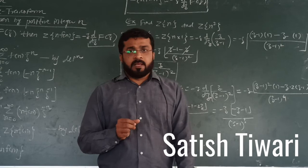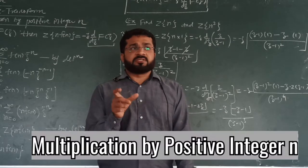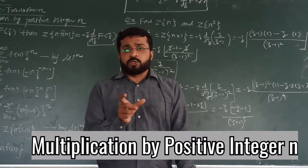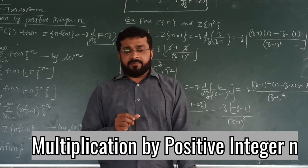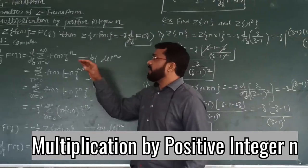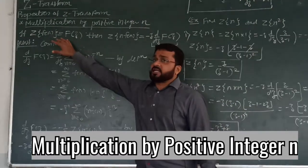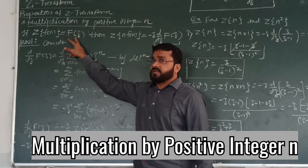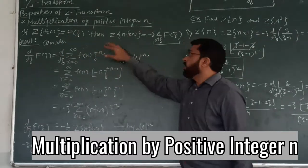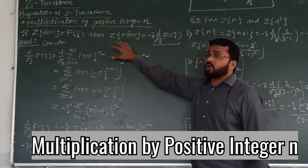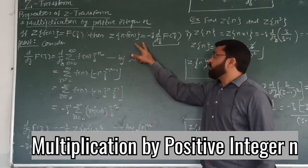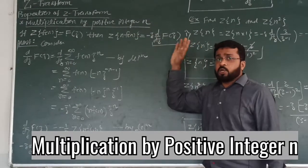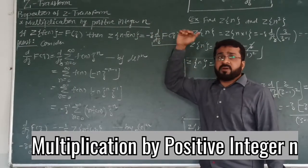The properties of Z-transform. The property we are going to see is multiplication by positive integer N. We have a statement that if the Z-transformation of F(n) is given as F(Z), then we have to show that the Z-transformation of N·F(n) equals minus Z times d/dZ of F(Z). This is the multiplication by N property.